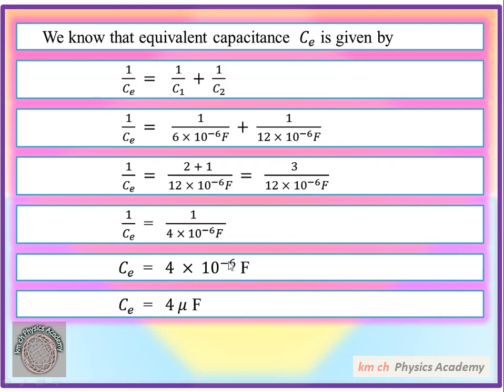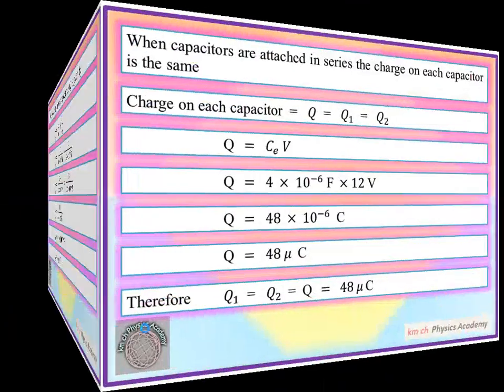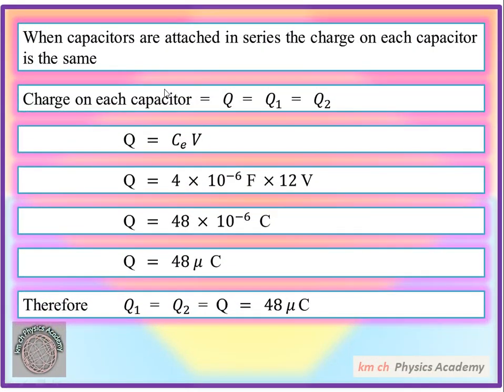Taking the reciprocal, Ce = 4×10⁻⁶ F. Since 10⁻⁶ is micro, the equivalent capacitance Ce = 4 microfarad. This is the equivalent capacitance of the two capacitors connected in series.